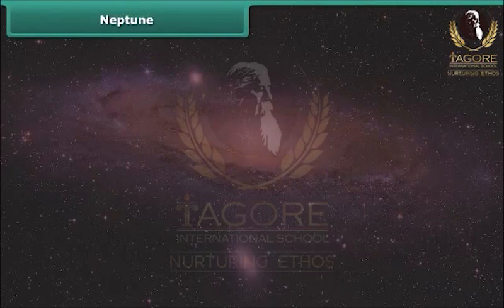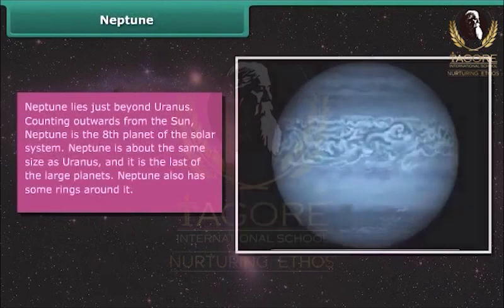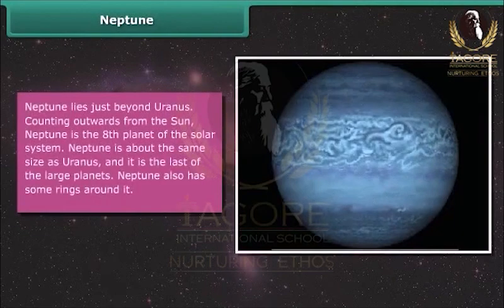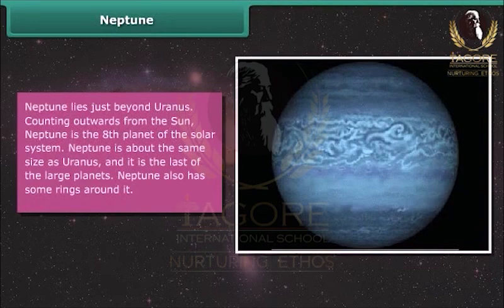Neptune lies just beyond Uranus. Counting outwards from the Sun, Neptune is the eighth planet of the solar system. Neptune is about the same size as Uranus and is the last of the large planets. Neptune also has some rings around it.